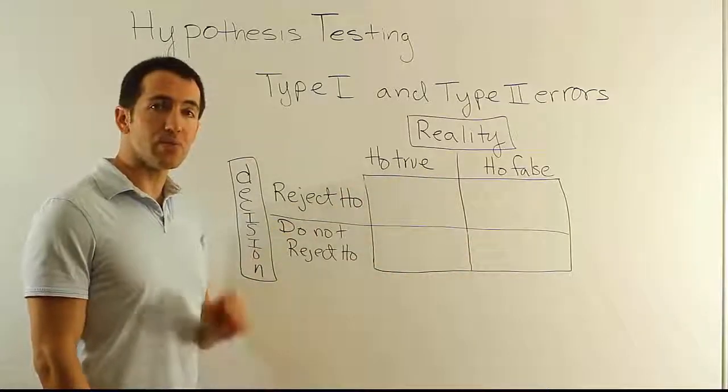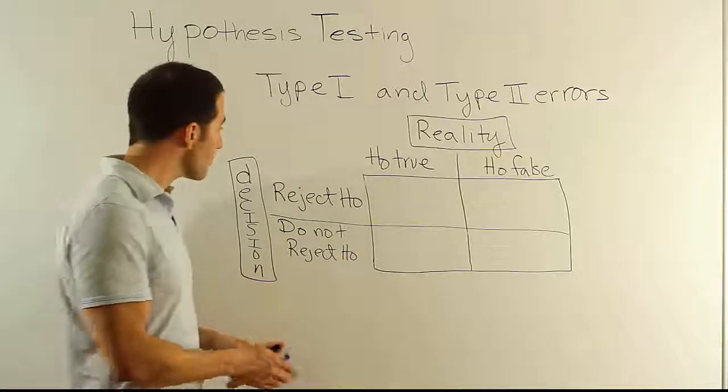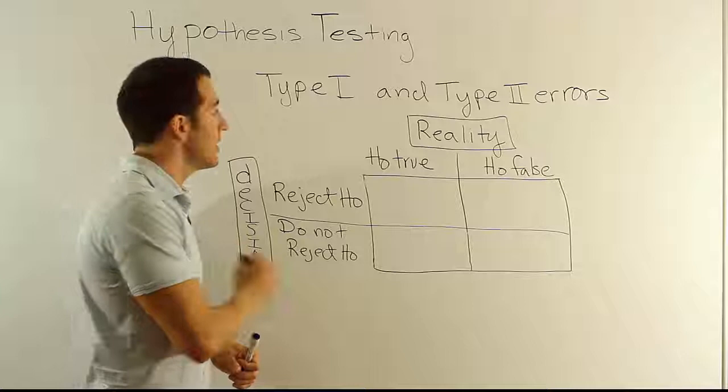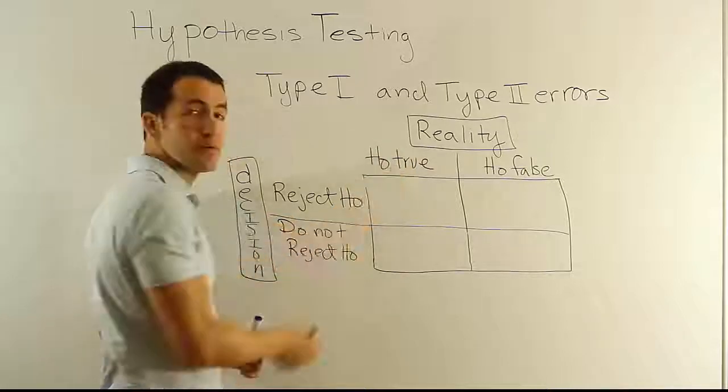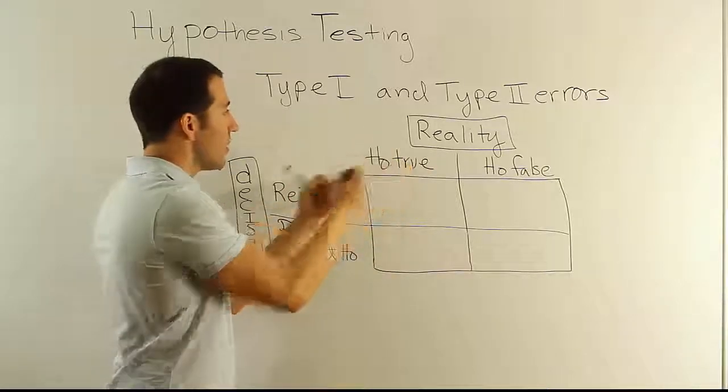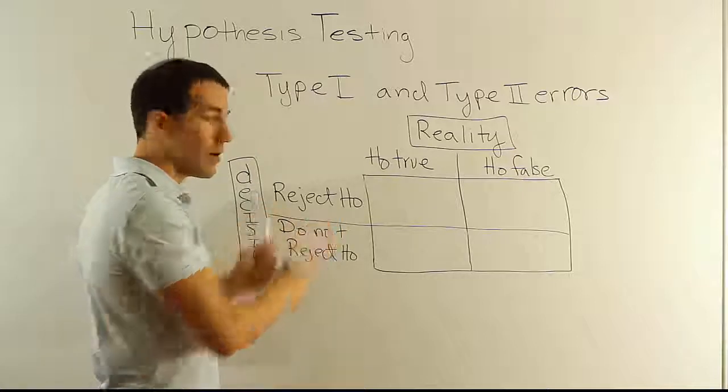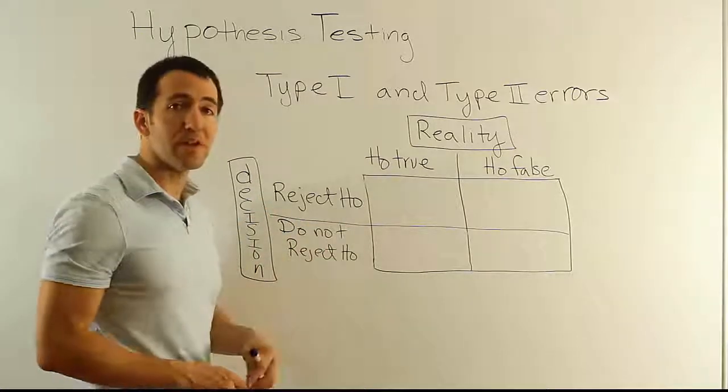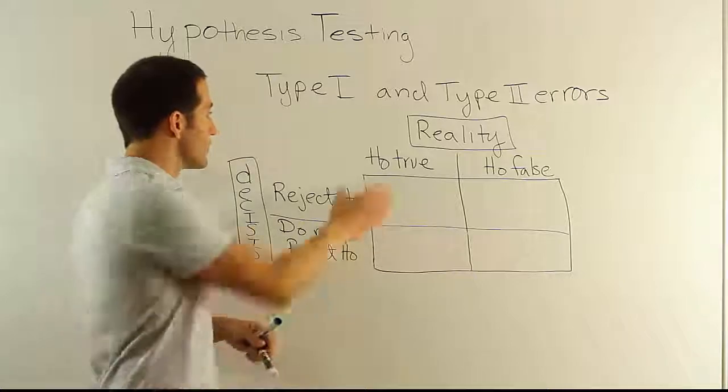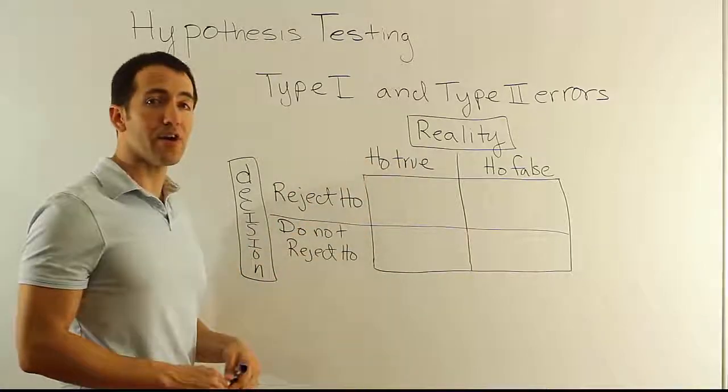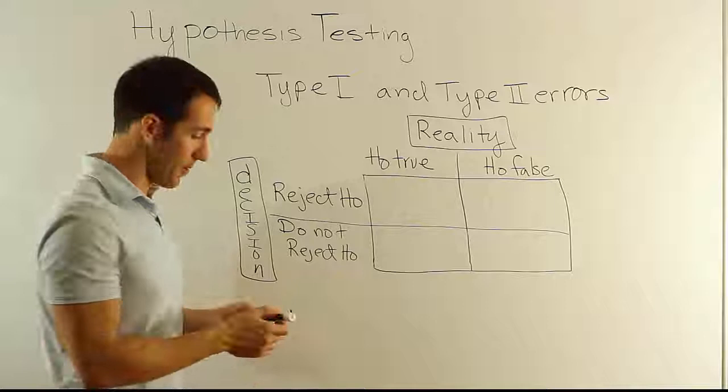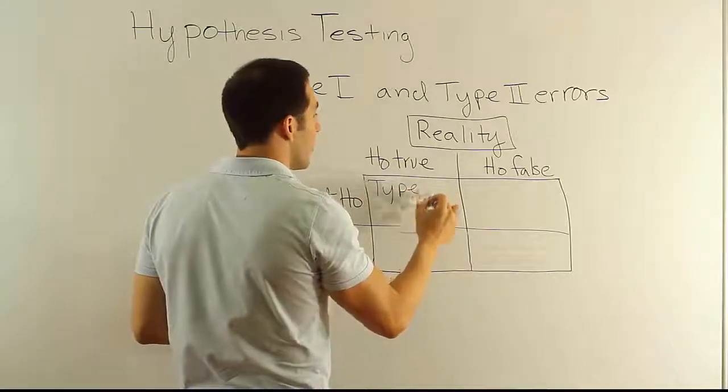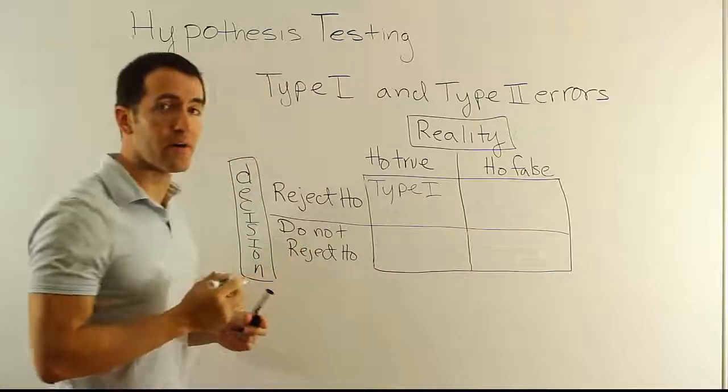Let's analyze these options and see which ones are the mistakes. So starting with this one, our decision is to reject the null and in reality the null is true. So the reality is the null hypothesis is true, but we come along and we decide to reject it and say it's not true. Well, if that happens, we've committed an error. If it's true and we reject it, we've committed an error. Let's call that the Type I error.